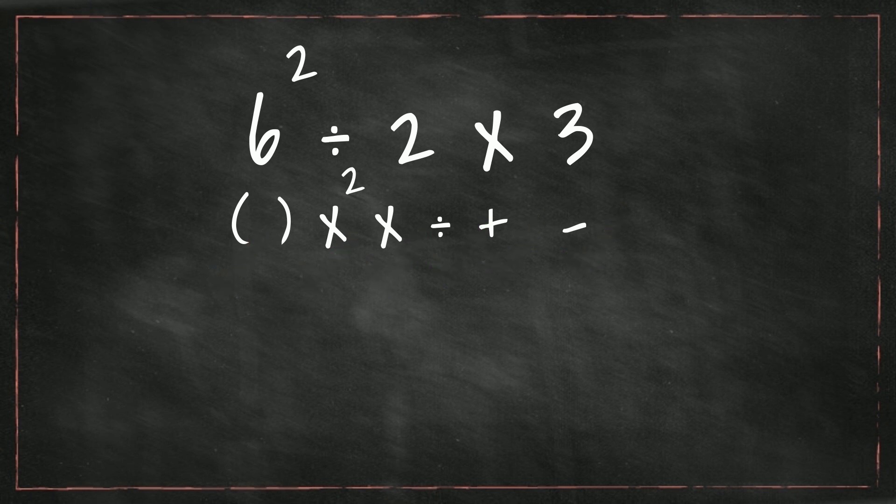Do we have parentheses? No, but we do have exponents. So let's begin there. 6 squared is 36. So now we have 36 divided by 2 times 3.